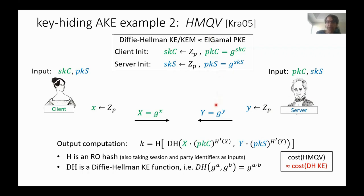HMQV can be seen as an optimization of Triple Diffie-Hellman. Everything is the same except for the key derivation equation, which in a very nice way combines this four-way matching of ephemeral keys and permanent keys for each side. The Diffie-Hellman contribution on the client side is a linear combination of the ephemeral and long-term contributions, and likewise for the server, where the linear combination uses a random coefficient output by the random oracle hash. We showed this protocol has the same key-hiding properties as Triple DH, but it's advantageous in that its cost is roughly the same as the Diffie-Hellman key exchange itself.